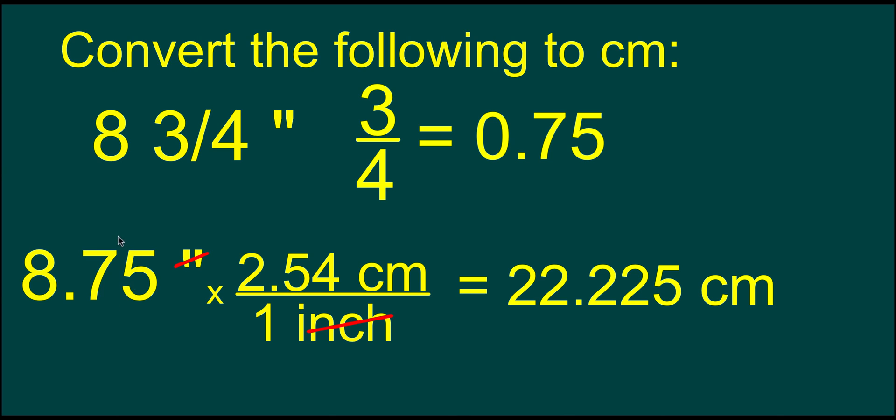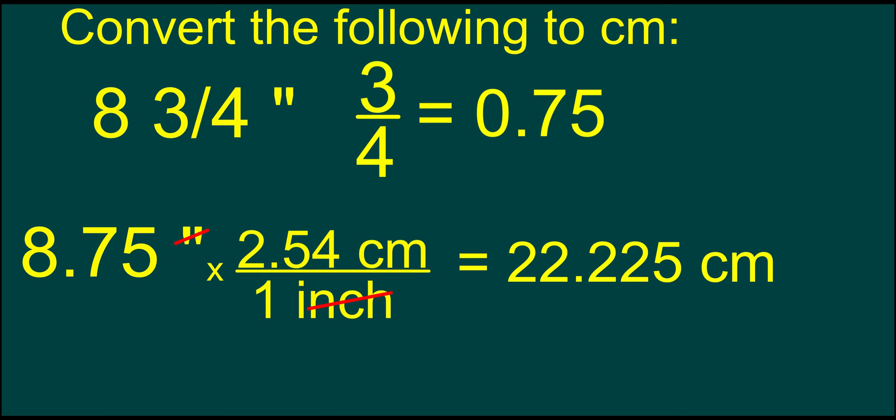Now this is our original number. This has 1, 2, 3 significant digits. Our answer has 1, 2, 3, 4, 5. So we can't have 5 significant digits in our final answer, so we need to round it. If we round it to 3 significant digits, we get 22.2 centimeters.